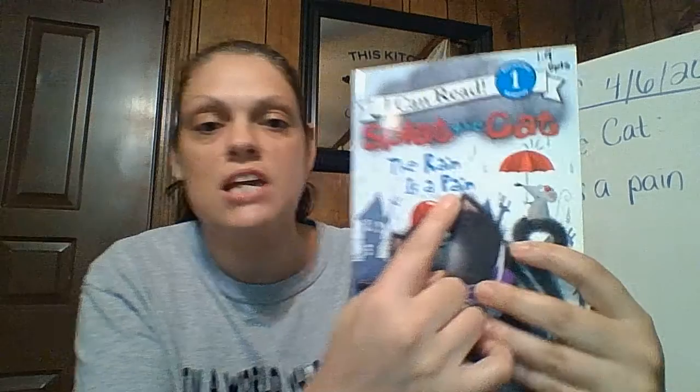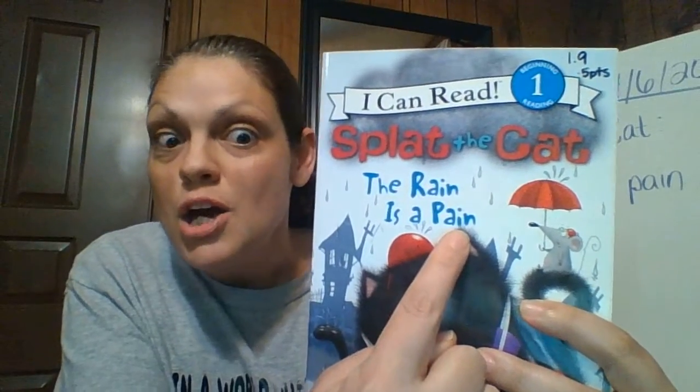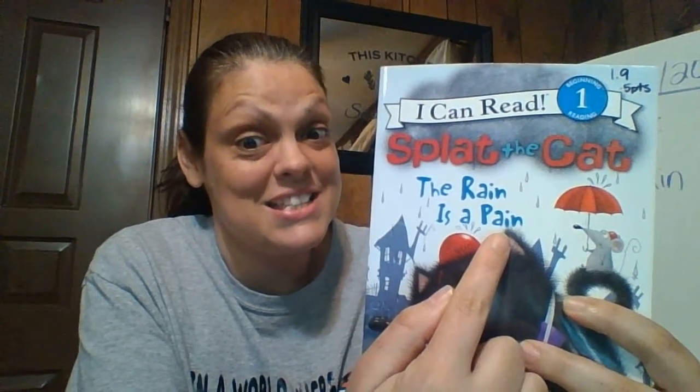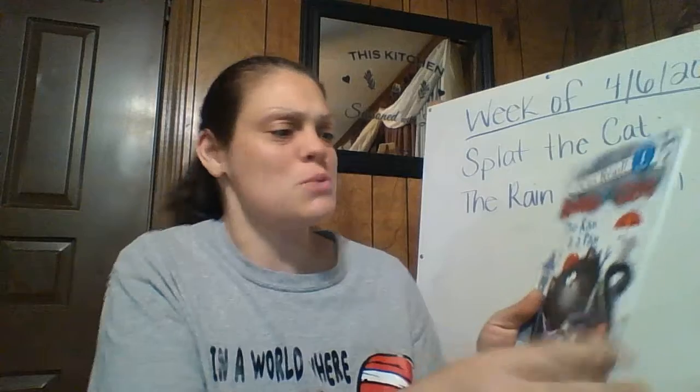The first thing I want you guys to notice is the title of this book: Splat the Cat, The Rain is a Pain. I know the letters are backwards from the camera, but if you look real close right here in the word 'pain,' we've got a vowel team — AI. Remember, sometimes whenever we have two vowels that go walking together, the first one says its name. So let's get started with this book.